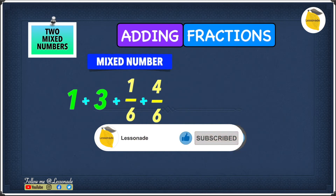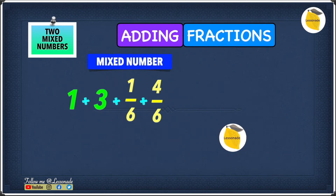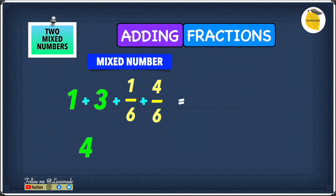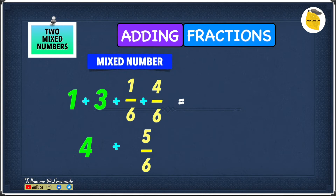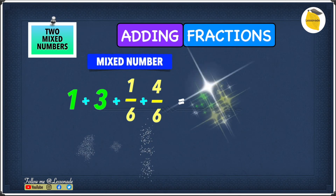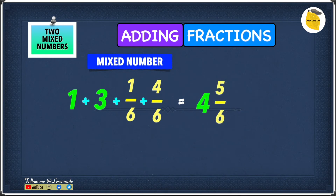Now the question looks much easier. We know that 1 plus 3 will give us 4. Then we need to add 1 over 6 plus 4 over 6, which gives us 5 over 6. So 4 plus 5 over 6 will give you 4 and 5 over 6. Our answer to this question is 4 5 over 6.